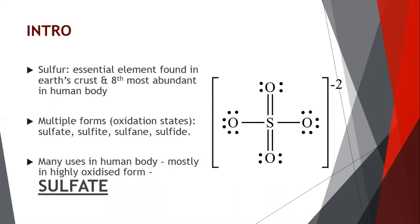To start off with, sulfur is an essential element found in the earth's crust. When I say essential, it means your body needs it because it can't produce it itself — so it needs to get it from the diet or via water. It's the eighth most abundant mineral in the human body, and sulfur exists in many different forms, technically referred to as oxidation states. These forms include sulfate, sulfite, sulfane, and sulfide. You may have heard of sulfite before because that's what they use as a preservative for things like wines and dried fruits.